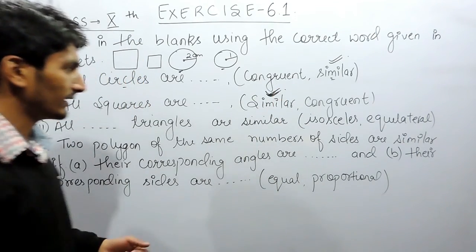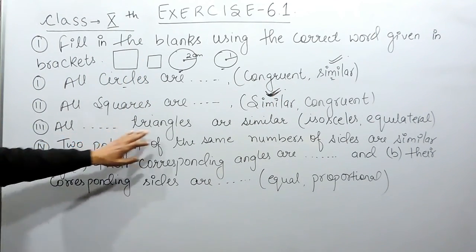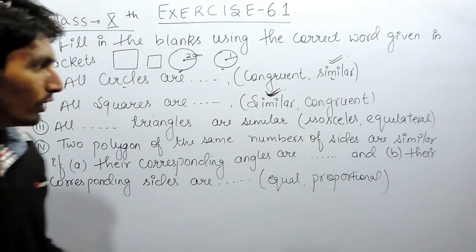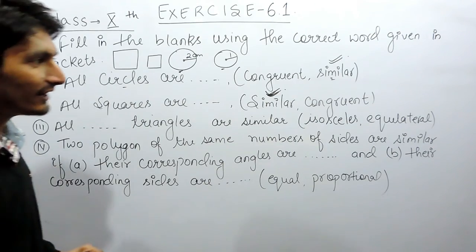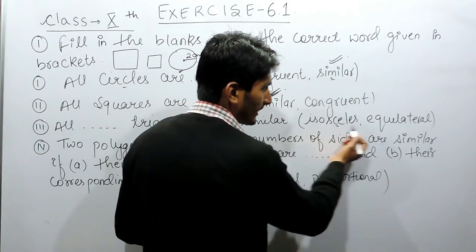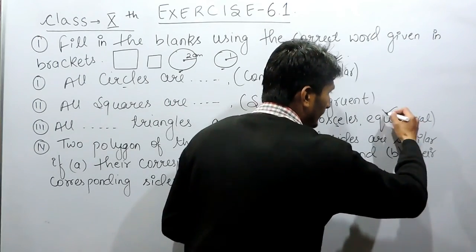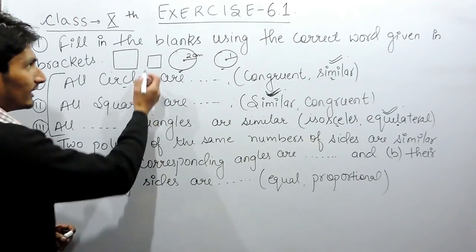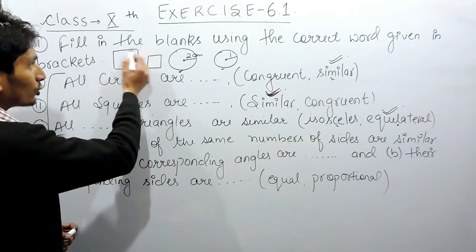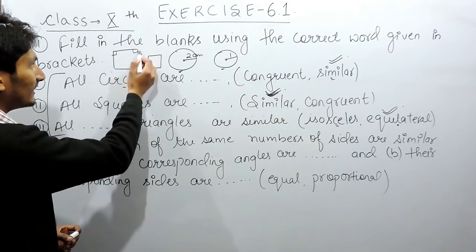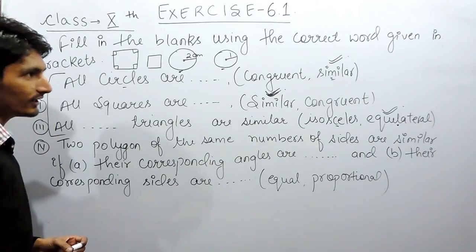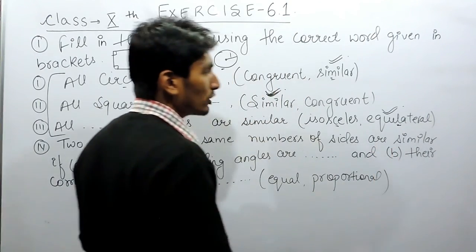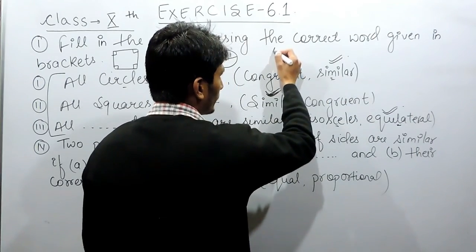So all squares must also be similar. Now in the third case: all dash triangles are similar — which type of triangle? We have two options: isosceles and equilateral. Clearly, all equilateral triangles must be similar. In other words, things which are regular in shape are similar — a square is a regular figure because all its sides are equal and every angle is equal. Similarly, a circle is also a regular figure, and an equilateral triangle is also a regular figure.